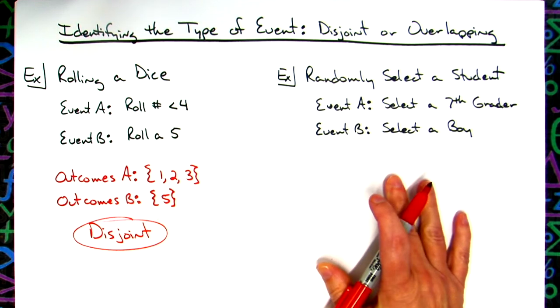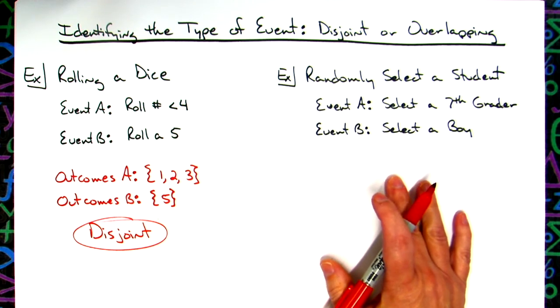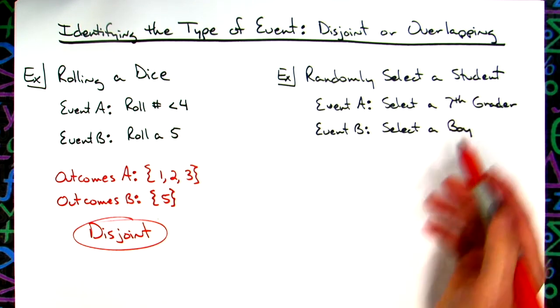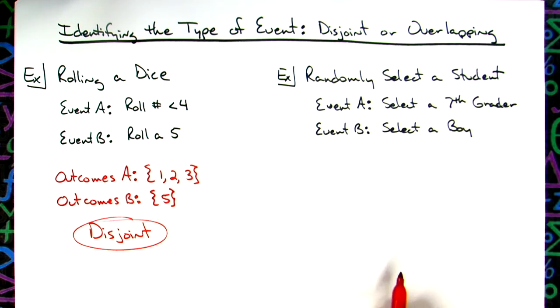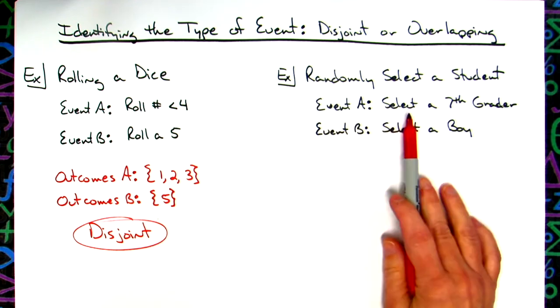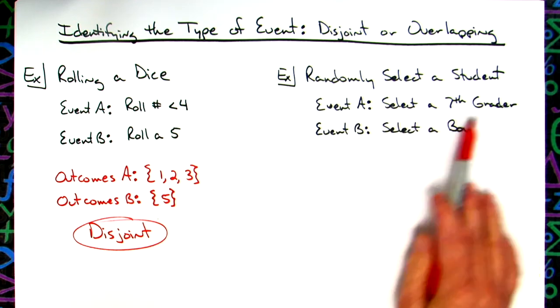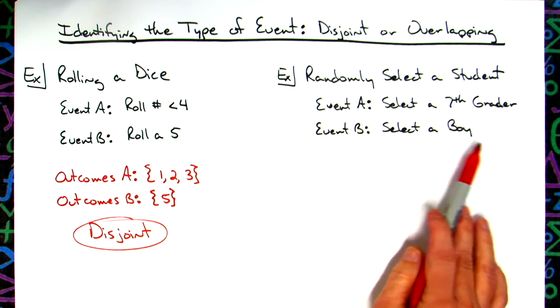Coming over to this example, let's say we're going to randomly select a student from a middle school. Event A is select a seventh grader, and event B is select a boy.